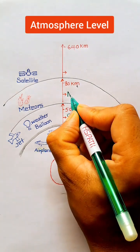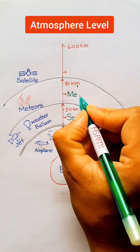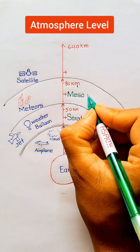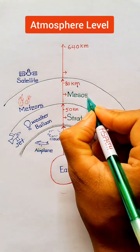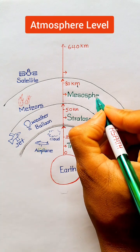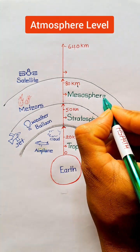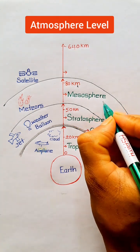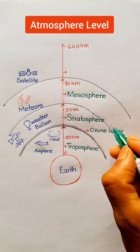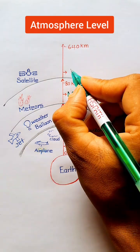The 50 to 80 kilometer region is called the mesosphere. In this region, different types of meteors fall.